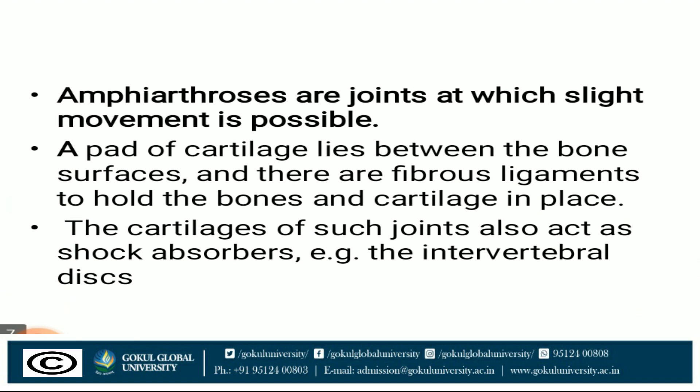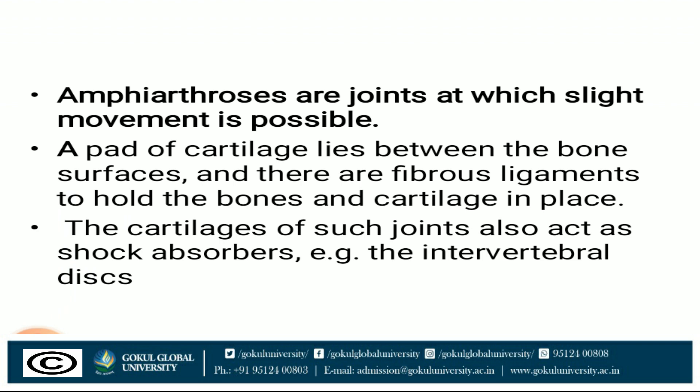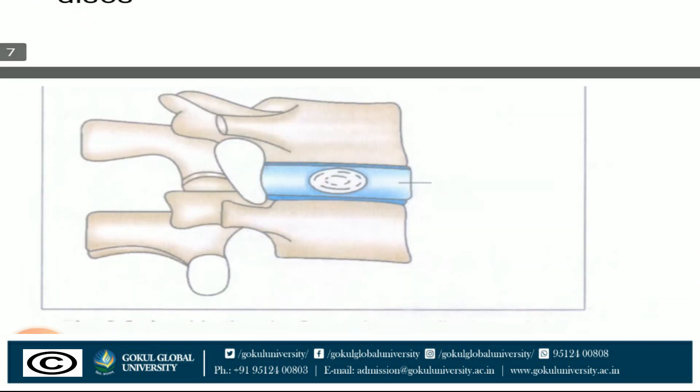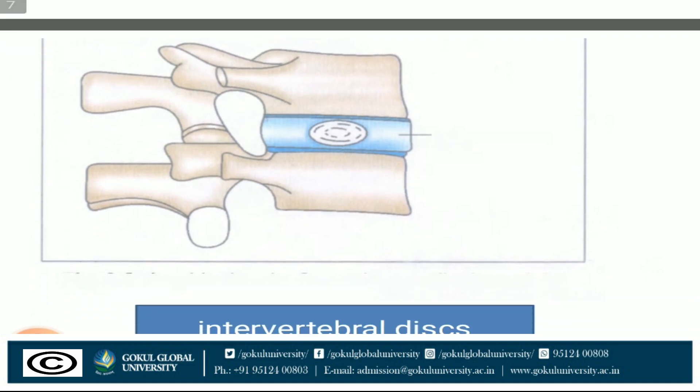Amphiarthrosis joints allow slight movement. A bed of cartilage lies between the bone surfaces, and fibrous ligaments hold the bones and cartilage in place. The cartilage also acts as a shock absorber. An example is the intervertebral disc, shown in the diagram with blue markings.